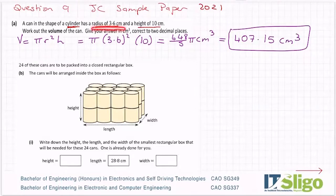So radius - if that had said diameter, you would have had to half it, but it said radius. Part B: 24 of these cans are to be packed in a closed rectangular box. Now, you know they're cans, so they're going to have gaps in the middle, because circles don't fit perfectly together. Write down the height, the length, and the width of the smallest rectangular box that will be needed for these 24 cans. They got 28.8 centimeters for the length. We'll think about that now in a minute.